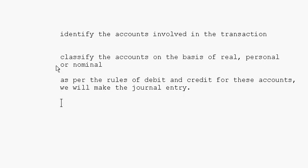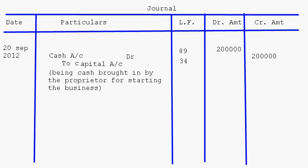We have seen in our earlier sessions the rules of debit and credit, and I had shown some examples of transactions — what accounts are involved and how to decide whether a particular account is to be credited or debited. The same thing goes here. In the journal we will be learning many other transactions and putting them in the journal format. In our next session, we'll take up journal entries further, take up transactions, and make journal entries for them. With that I come to the end of this session on journals.